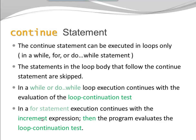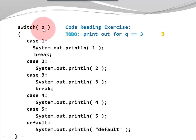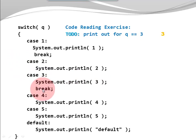Now it is your turn. Look at the switch statement. Assume that the variable q has the value 3. What is going to be the output produced by the execution of this switch statement? Pause the video, and when you're ready press continue. So notice the output is 3. We enter the switch statement with q equal to 3, look for the entry point — not 1, not 2, it is 3. So we print 3 and hit a break statement, which takes us out of the switch.